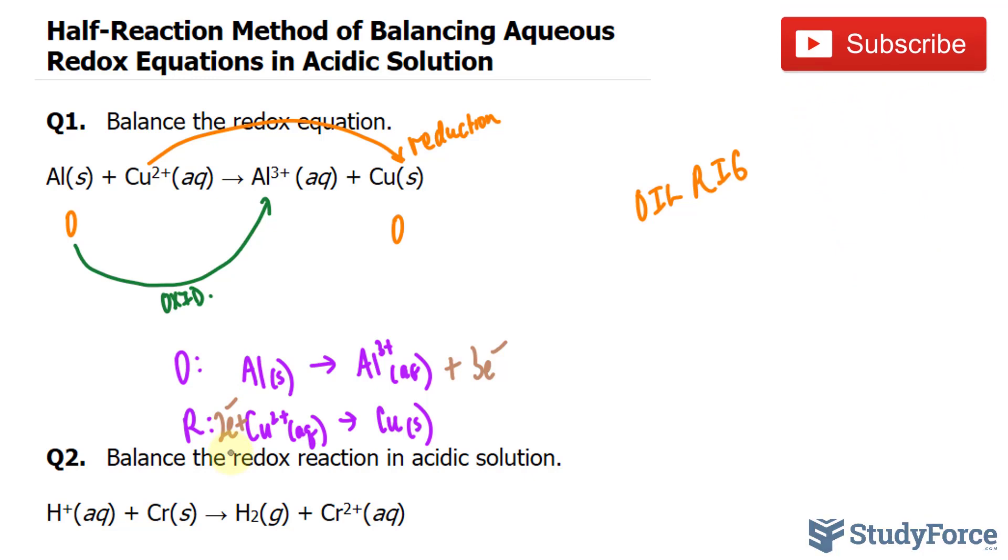The next step is make the number of electrons in both half-reactions equal by multiplying one or both half-reactions by a small whole number. In other words, we're trying to find the common multiple between the amount of electrons here and the amount of electrons here. We have 3 here, 2 here. They will both meet at 6 at some point. That's the common multiple.